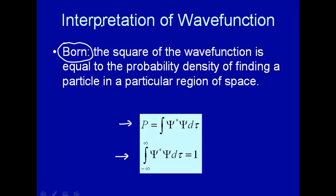So that's what it means by the wave function. The square of the wave function is the probability density of finding a particle in a particular region of space. Multiply it by that particular volume, and that gives you the probability of finding the particle within that volume.